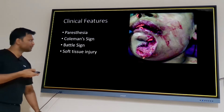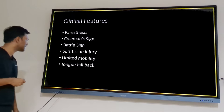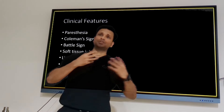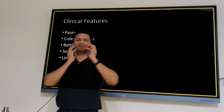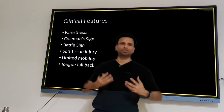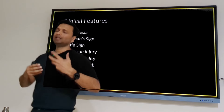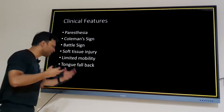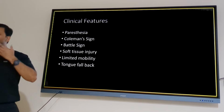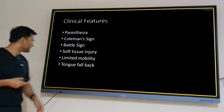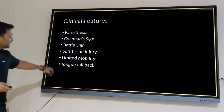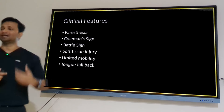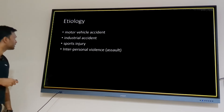Other clinical features include soft tissue lacerations, trismus due to muscle spasm and pain causing limited mouth opening, and the previously mentioned tongue fall-back in bilateral parasymphysis fractures, which can be life-threatening. The bilateral parasymphysis with tongue displacement should always be kept in mind.